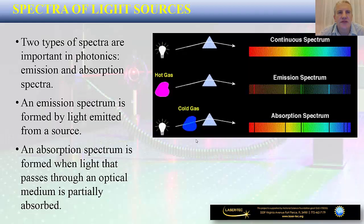Every light source emits radiation at specific frequencies; that range of frequencies is called its spectrum. We can define two types of spectra important in photonics: an emission spectrum, formed by light being emitted from a source, and an absorption spectrum, formed when light passes through a specific medium and is partially absorbed.